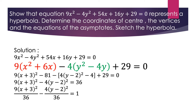Example 2: Show that the equation 9x² - 4y² + 54x + 16y + 29 = 0 represents a hyperbola. Determine the coordinates of the center, the vertices, and the equations of the asymptotes, and sketch the hyperbola. The strategy is: first, group the x variable terms (in red) and the y variable terms (in green). Then factor out 9 from the x variable terms and 4 from the y variable terms.